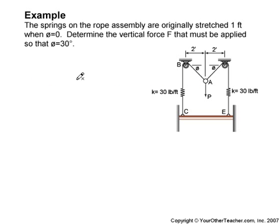The springs on the rope assembly are originally stretched one foot when phi is equal to zero degrees. Determine the vertical force F that must be applied so that phi is equal to 30 degrees.